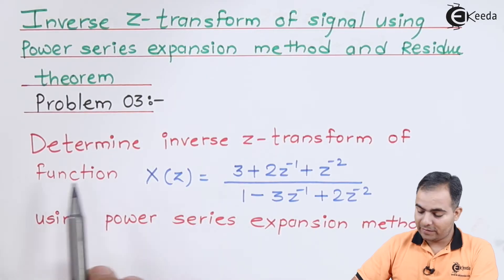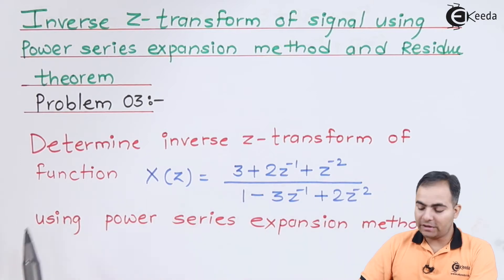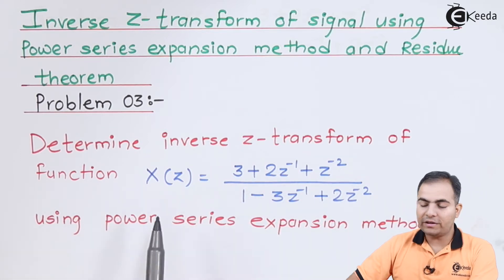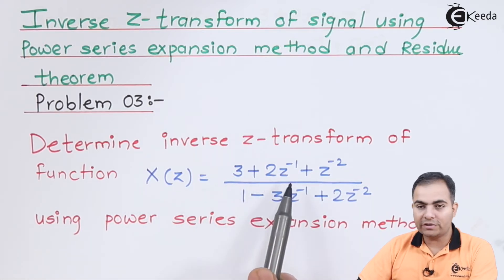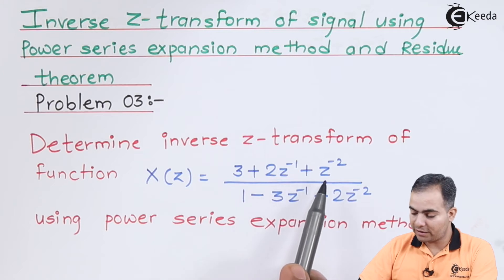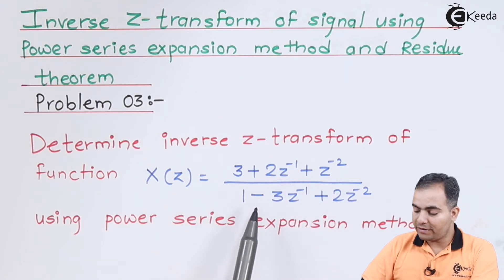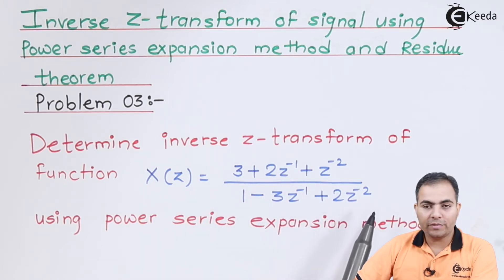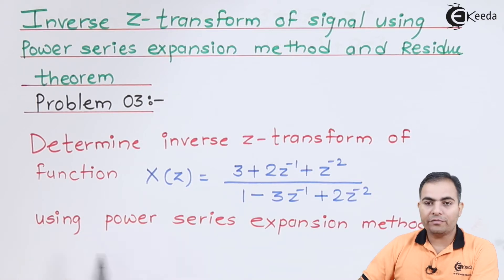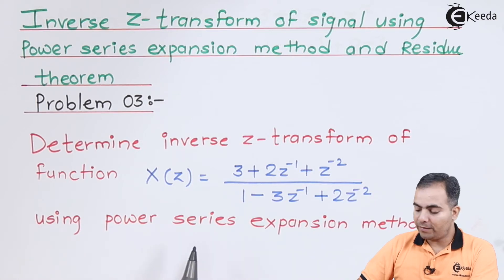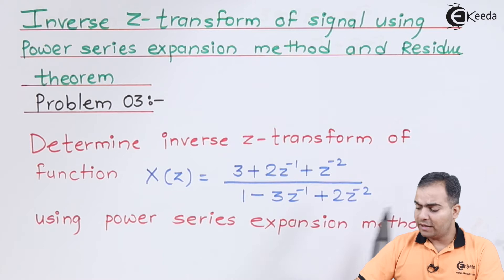Problem number 3: determine the inverse Z-transform of the function X of Z, which is given as (3 + 2Z⁻¹ + Z⁻²) divided by (1 - 3Z⁻¹ + 2Z⁻²), and we have to find it using the power series expansion method.